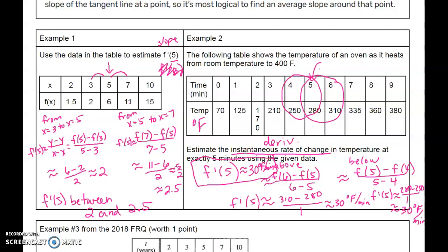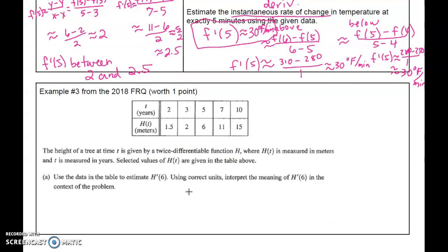The other type is like number 3. This was from the 2018 question. We have the height of a tree. It says twice differentiable function - that doesn't mean anything to you yet. H is measured in meters and t is measured in years. Selected values of H are given, and use the data in the table to estimate H'(6). They want us to use correct units and interpret the meaning. This is where we start learning how to interpret a derivative.